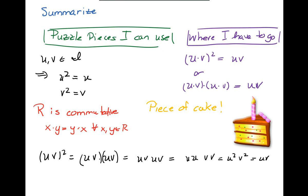Technically, I remember I said this wasn't hard. uv squared is equal to uv times uv which is expanded out. I can drop off the parentheses uv uv and I can rearrange things because R is commutative and I get u squared v squared is equal to uv.